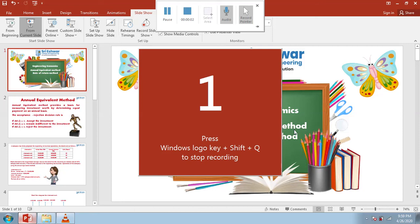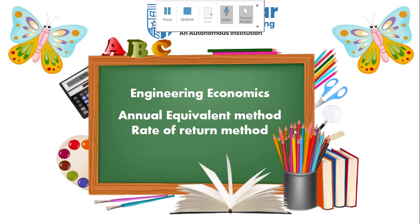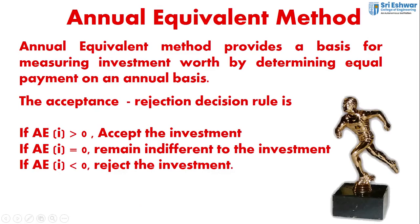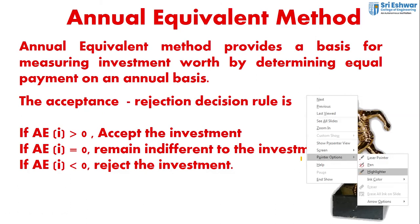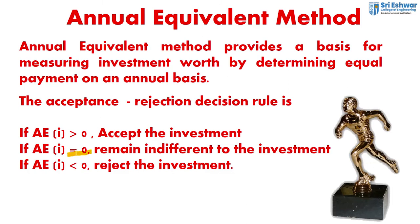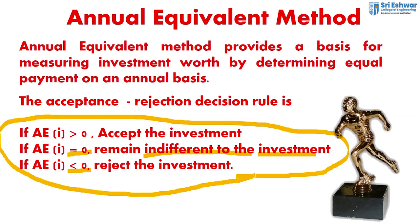Another method is the Annual Equivalent Method, which provides a basis for measuring investment worth by determining equal payment on an annual basis. There are three criteria: if the annual equivalent value for interest i is greater than zero, accept the investment; if equal to zero, remain indifferent; if less than zero, reject the investment. These are the decision rules we have to follow.